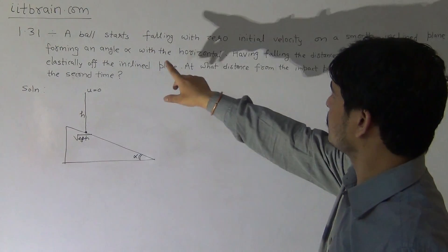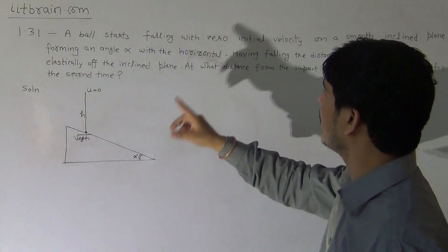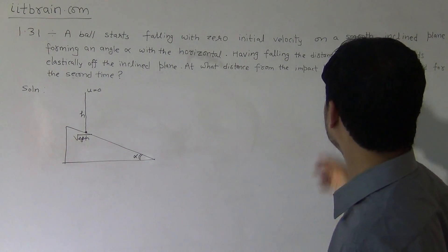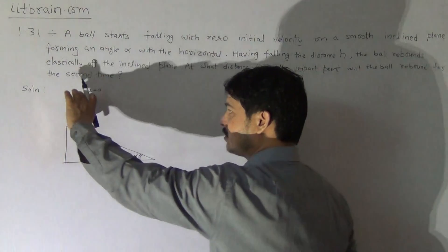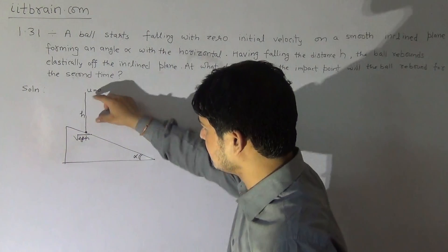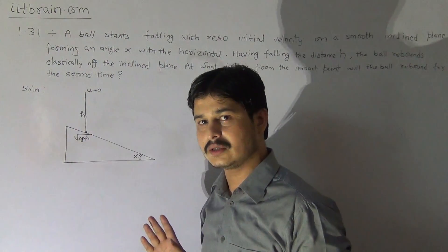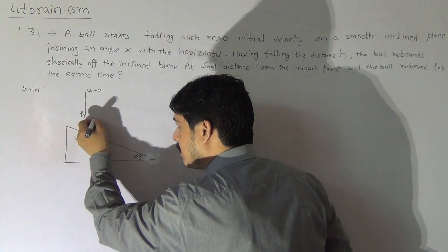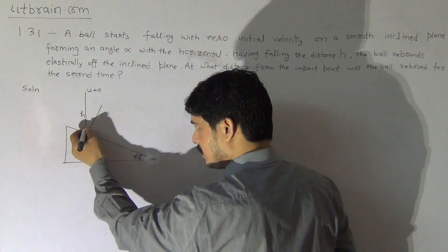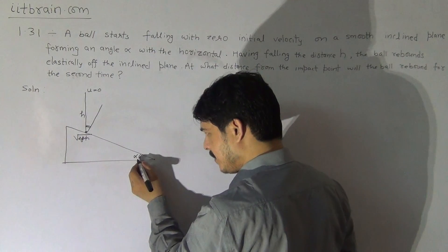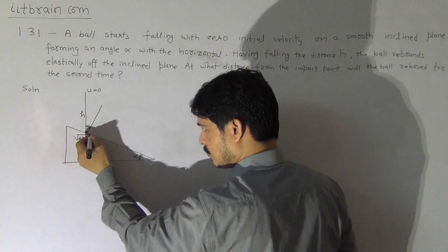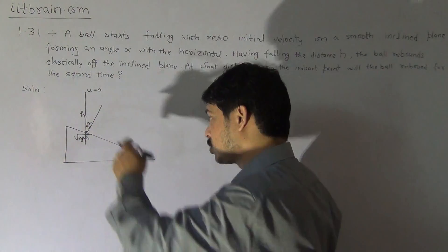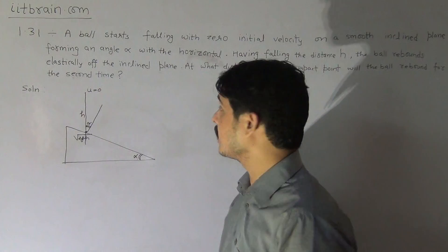A ball starts falling with zero initial velocity on a smooth inclined plane forming angle alpha with the horizontal. Having fallen distance h, the ball rebounds elastically. At what distance from the impact point will the ball rebound for the second time? If we draw the normal to the incline, the angle between the normal and the vertical is alpha, so the particle hits the incline at speed root 2gh making angle alpha with the normal.